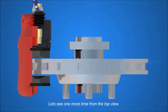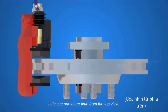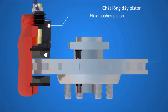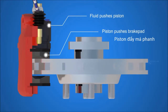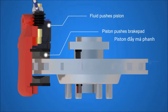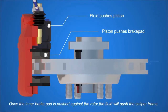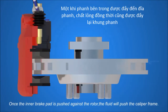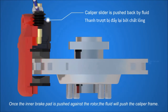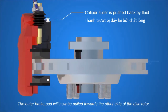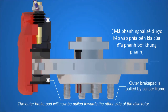Let's see one more time from the top view. The fluid pushes the piston, and the piston pushes the inner brake pad. Once the inner brake pad is pushed against the rotor, the fluid pushes the caliper frame, and the outer brake pad is pulled towards the other side of the disc rotor.